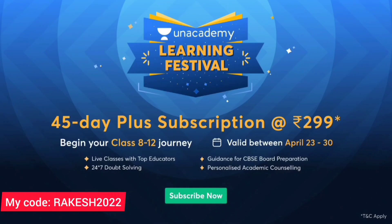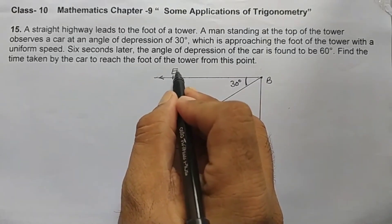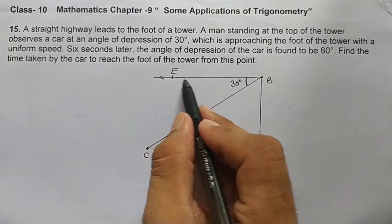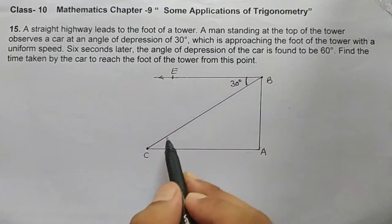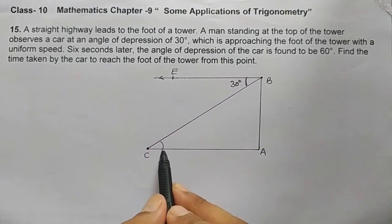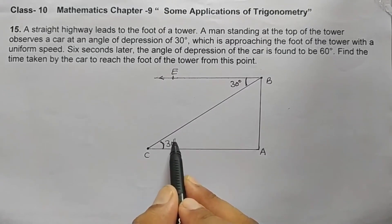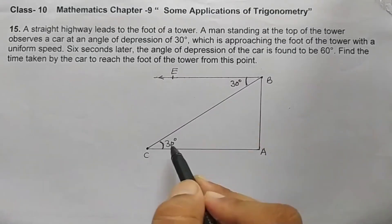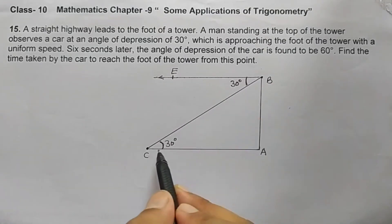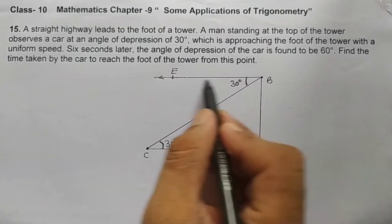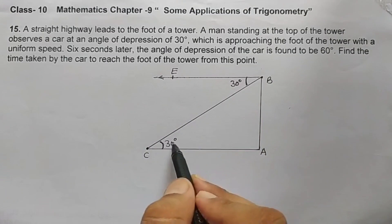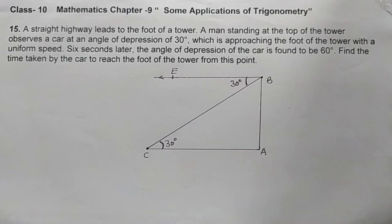This angle is 30 degrees, so this inside angle will also be 30 degrees, because these two angles are alternate interior angles. These two lines are parallel, so these are alternate interior angles.